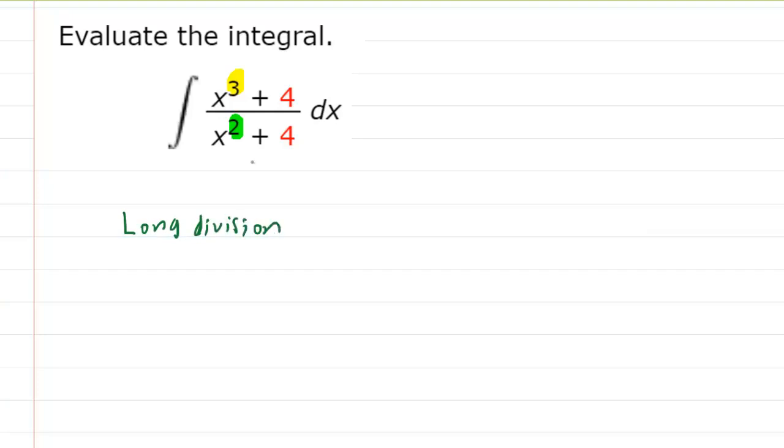And that's going to have to occur before we even think about partial fractions. So we have to take our numerator, x cubed plus 4, and then divide that by our denominator, x squared plus 4. And the way to do this is to take the first term and divide it by the first term within each expression. So in other words, you're going to do x cubed divided by x squared, which of course is just x.